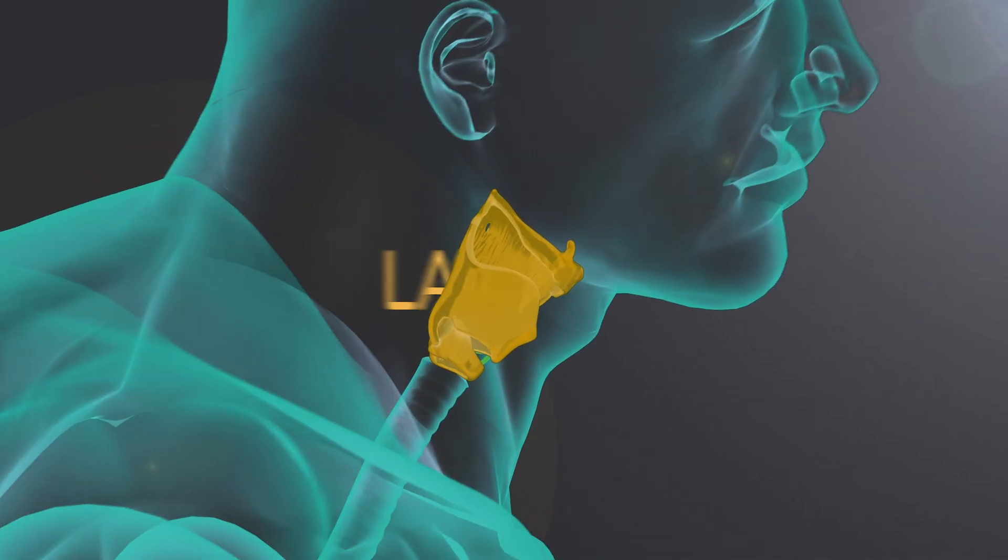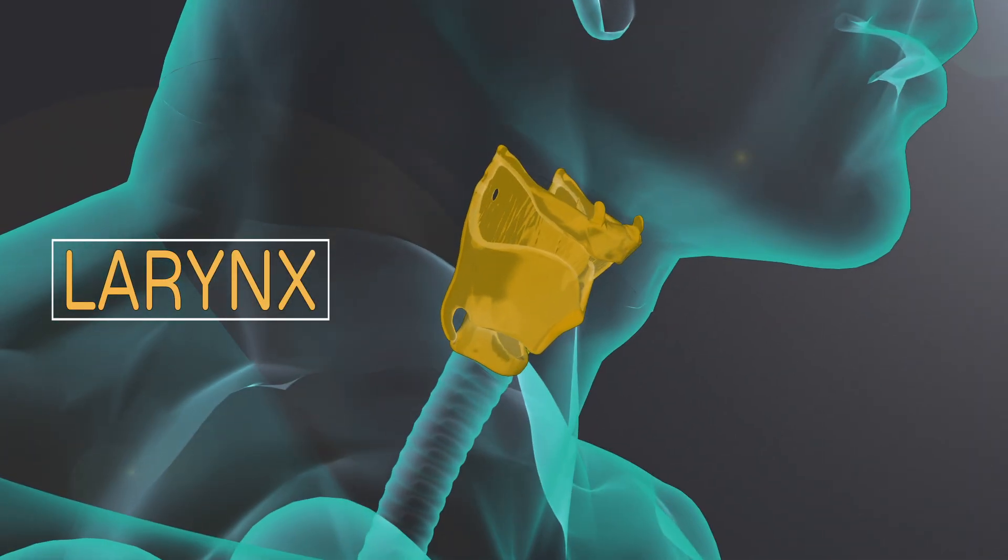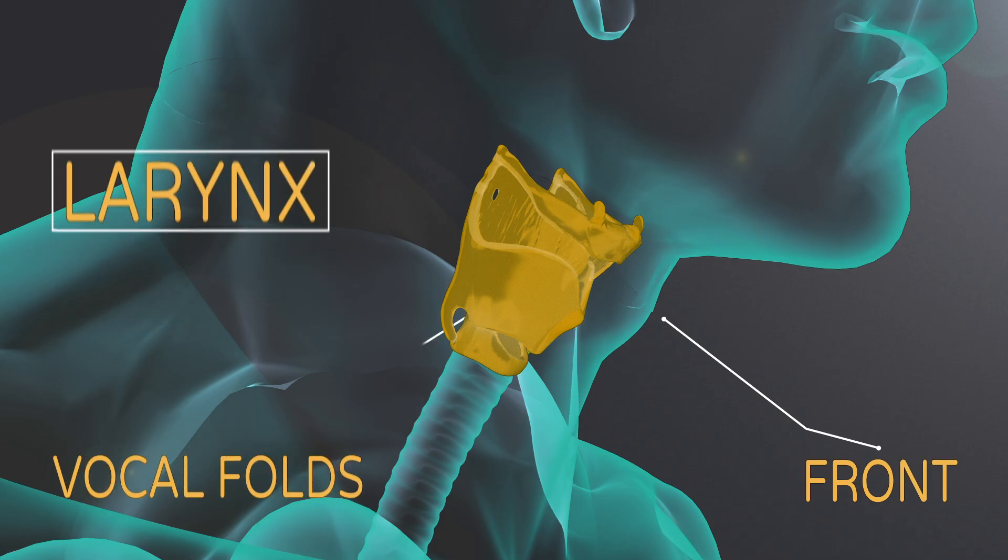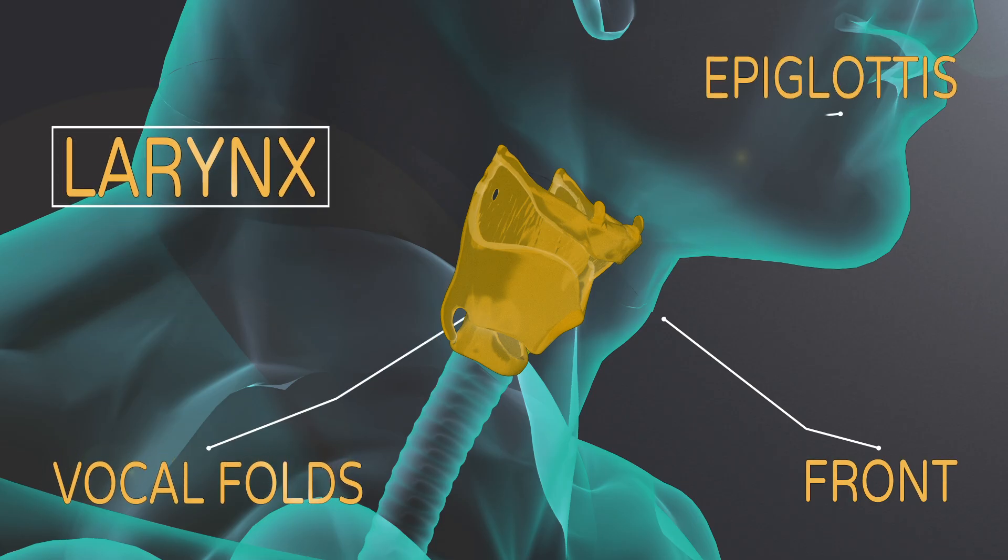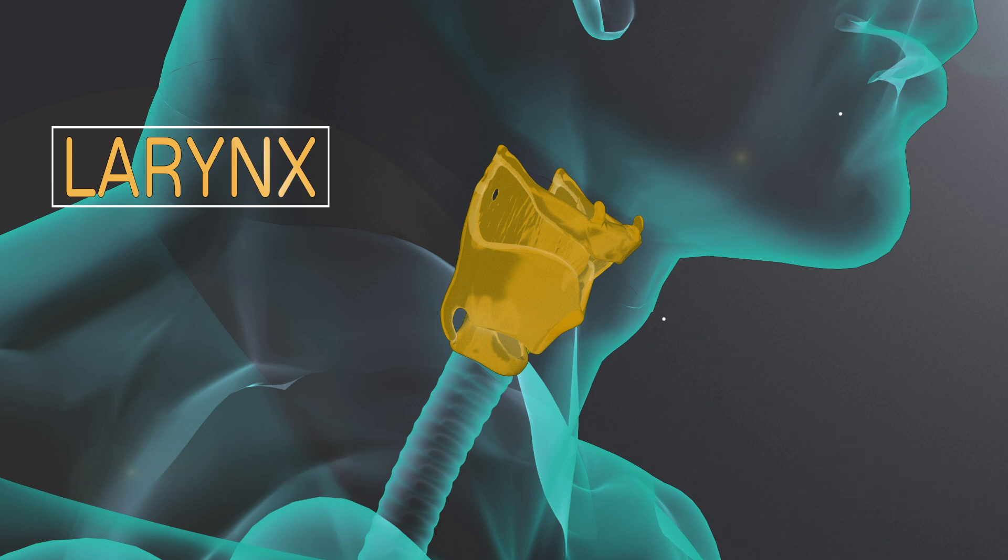This is the larynx from the side. This will be the front of our neck. These are the vocal folds and on top is the epiglottis which has an important role in our protection.